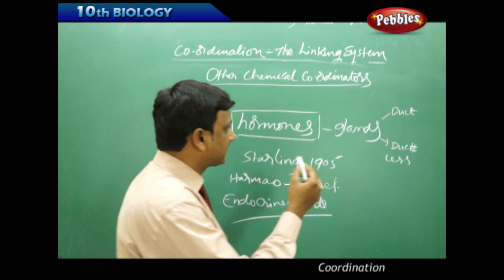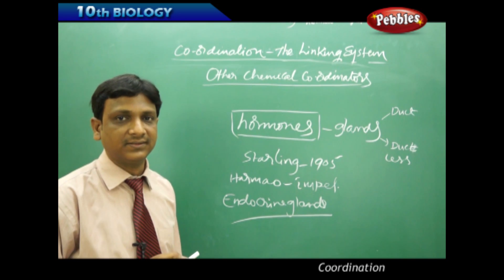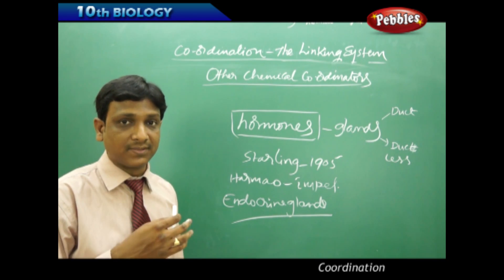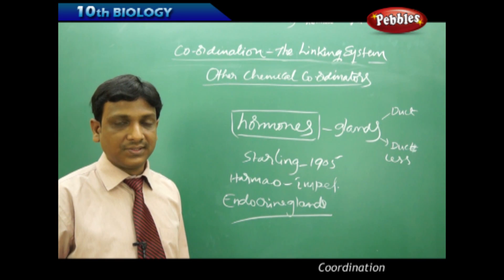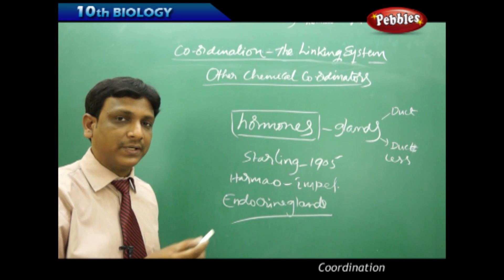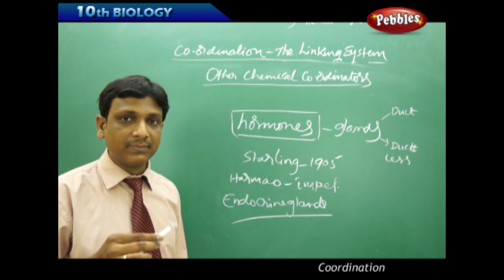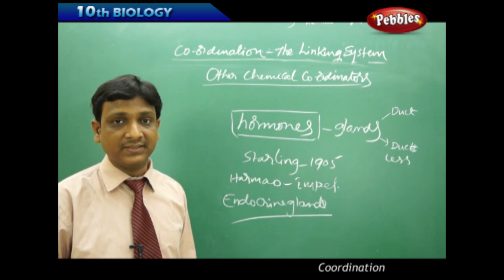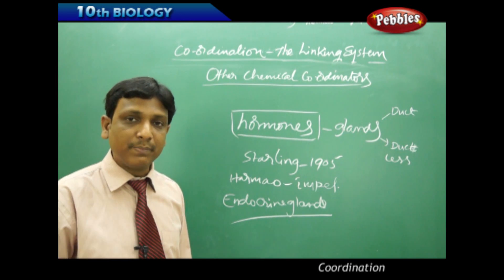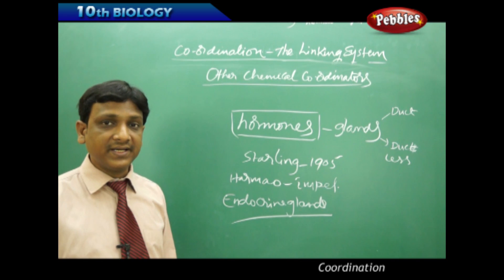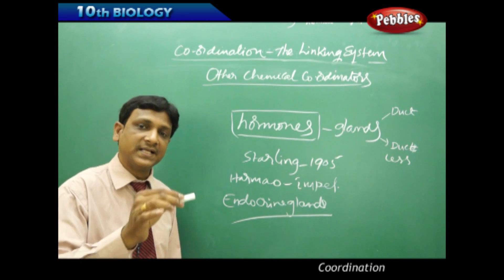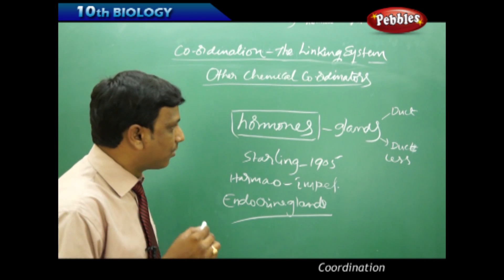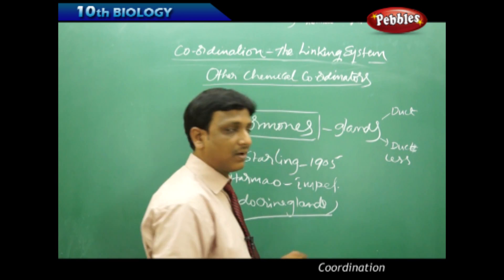So the two types are ducted glands and ductless glands. Salivary glands, lacrimal glands, and sweat glands are ducted glands — they have a pipe to pass their secretion. Sometimes certain glands act as both endocrine and exocrine glands. For example, the pancreas secretes pancreatic juice, which passes through a duct to the duodenum — acting as a ducted gland. But the same pancreas has islet cells which secrete their secretions directly into the blood without any duct, making it an endocrine gland.